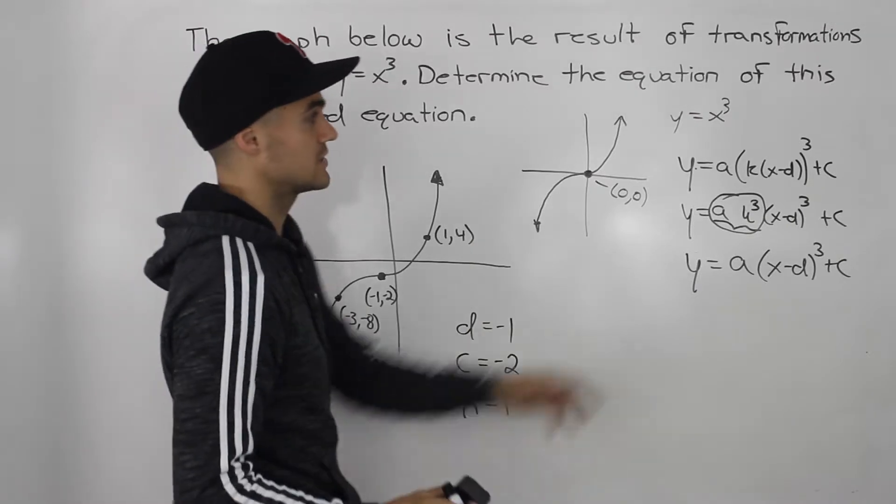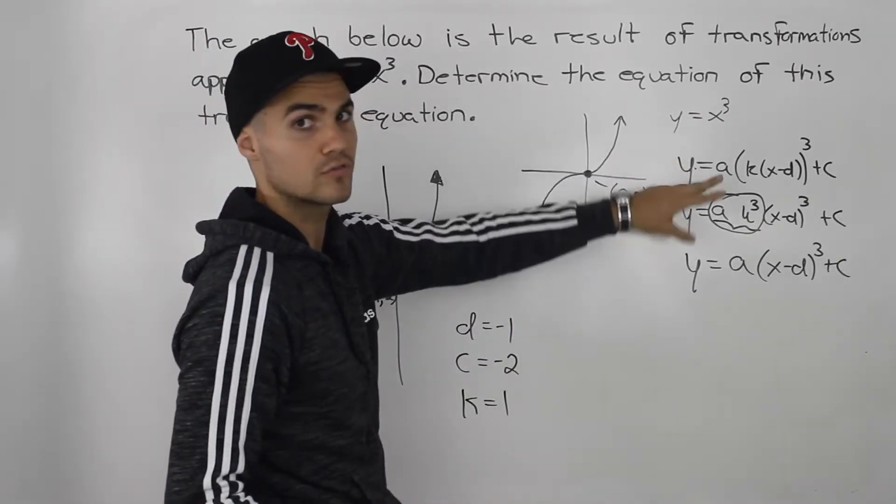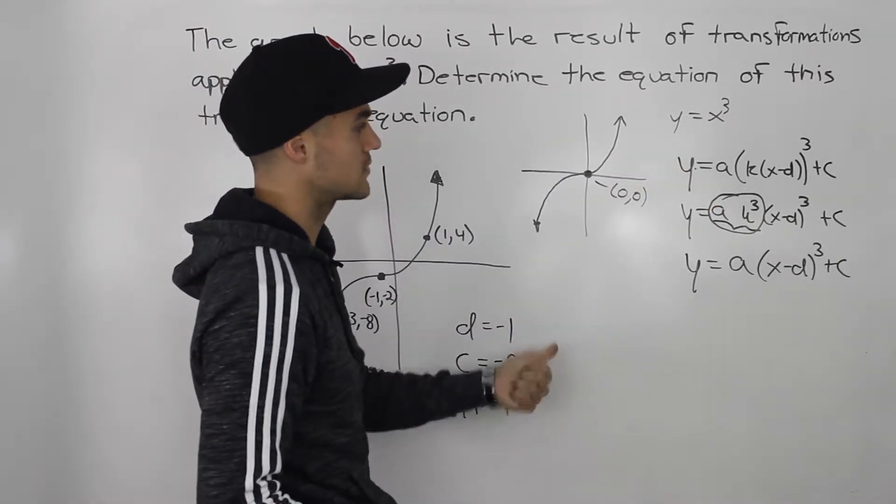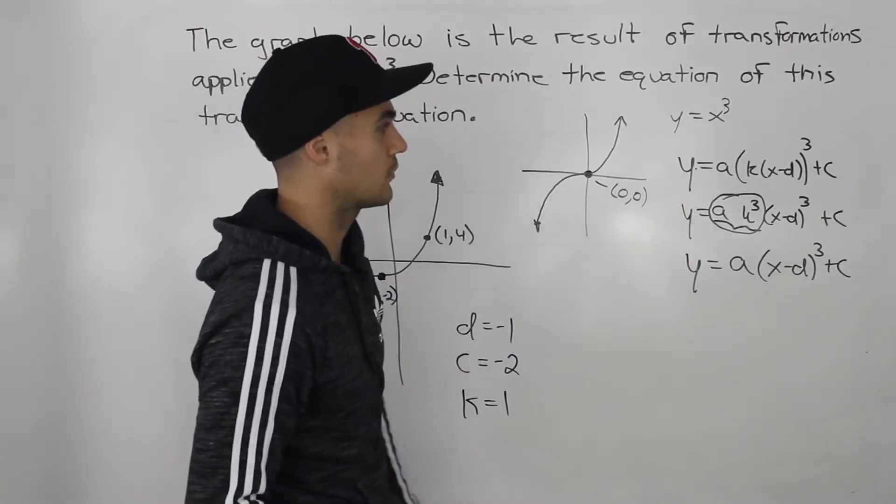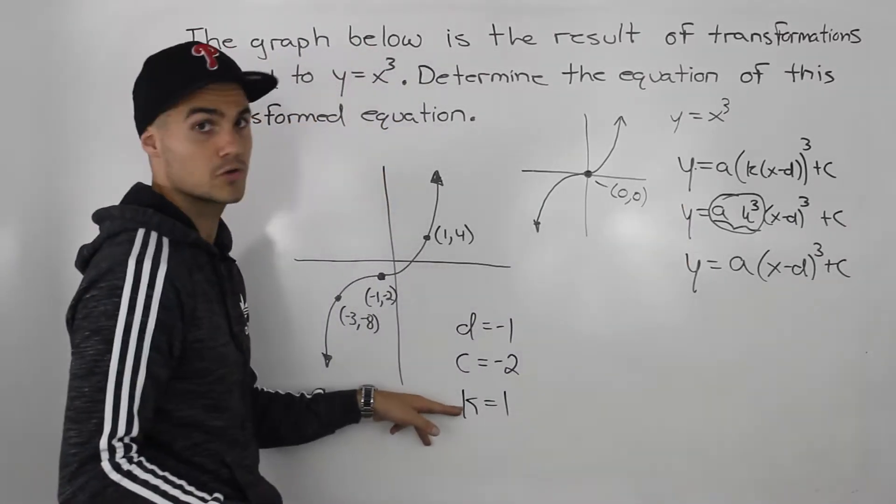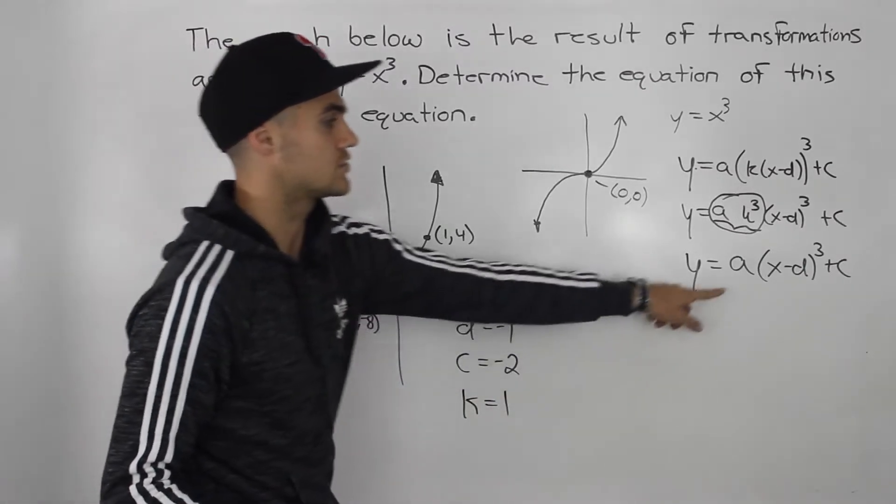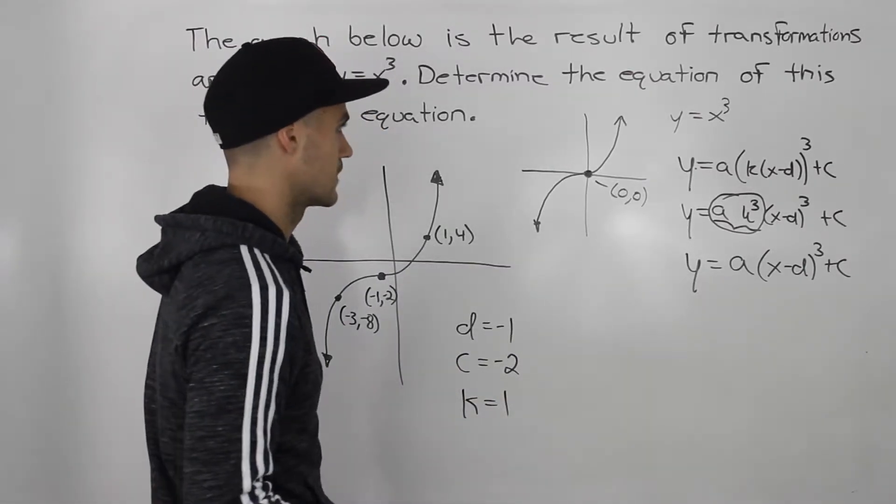This is only happening when you're dealing with x cubed, remember, only for this function. It also works with x squared and x to the power of 4, but with x cubed, this is how it works. You can forget about the k value, you can always make it equal to 1 and you just solve for that a value.